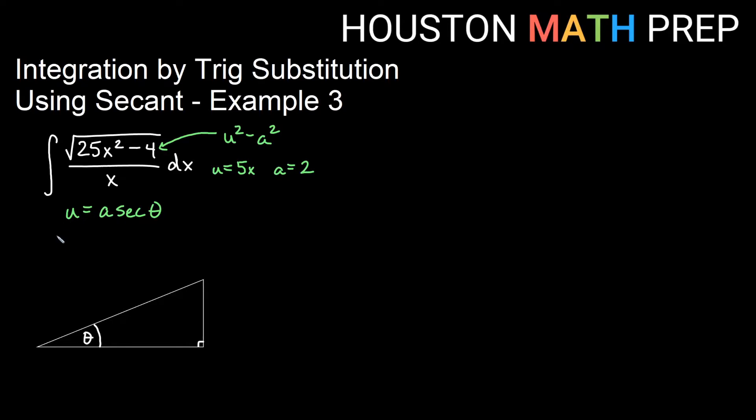So our substitution will be that 5x is equal to 2 secant of theta. I'm going to change this in two different ways. So first of all if I'm substituting x and dx I'm going to need just x so that I can get dx.